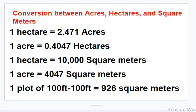If you have one plot of 100 by 100 feet, you have approximately 926 square meters. So you would need about nine plots of 100 by 100 to have one hectare — that would give you close to 10,000 square meters. This is how land is measured mostly in Nigeria and rural areas. In cities like Lagos or Abuja where demand for land is very high, one hectare may not be up to 10,000 square meters — it might be 8,000 or 9,000-plus square meters.